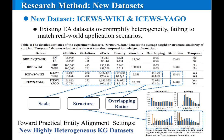To address this issue, we introduce two new datasets that better reflect real-world entity alignment scenarios, especially in dealing with highly heterogeneous knowledge graphs.